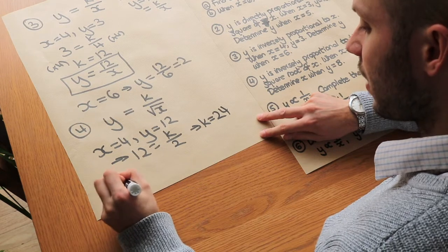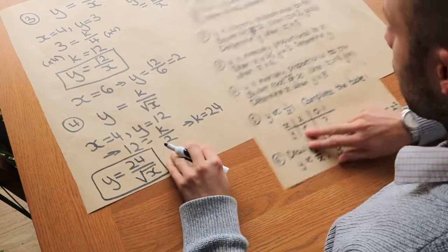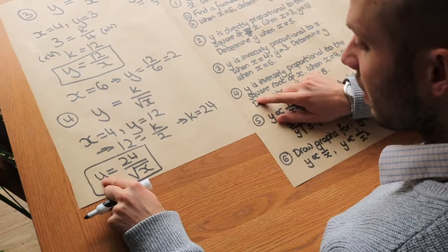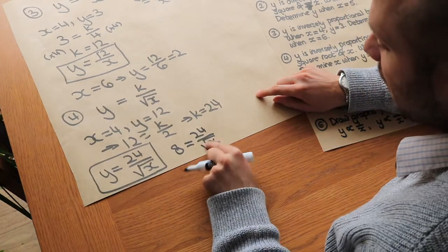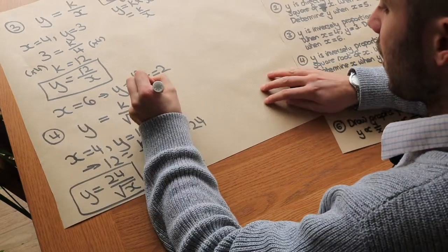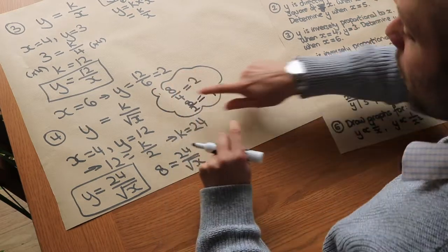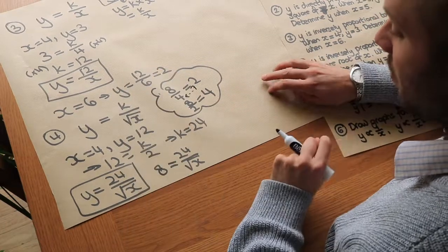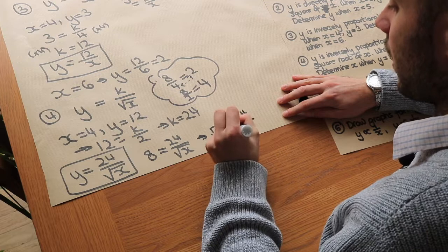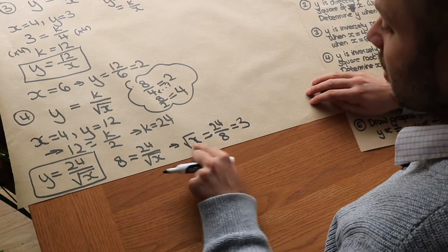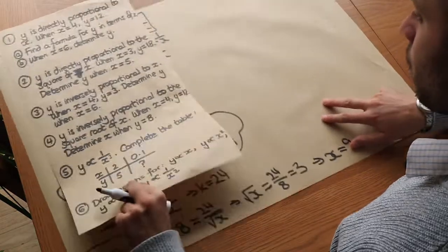So our formula is y equals 24 over the square root of x. Now determine x when y is 8: substituting gives 8 equals 24 over root x. Using the swapsy trick — swapping what we're dividing by and the result, like swapping 4 and 2 in 8÷4=2 to get 8÷2=4 — root x equals 24 over 8, which is 3. To remove the square root we square both sides, giving x equals 9.